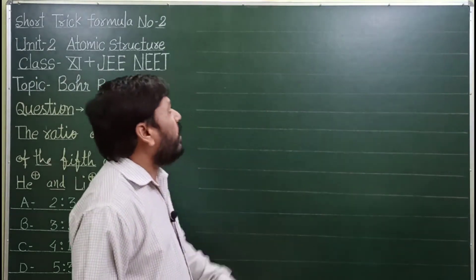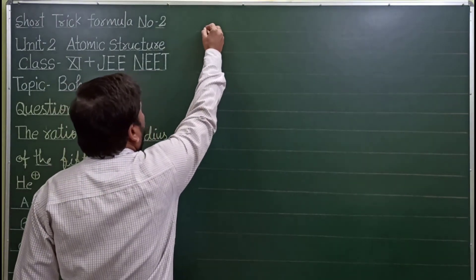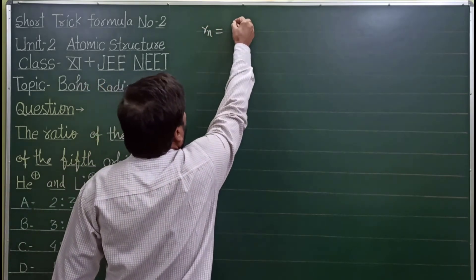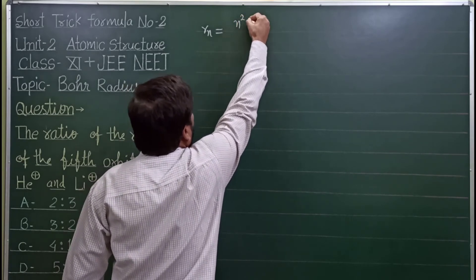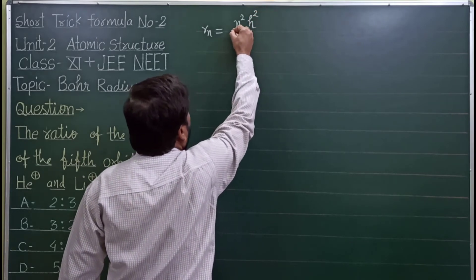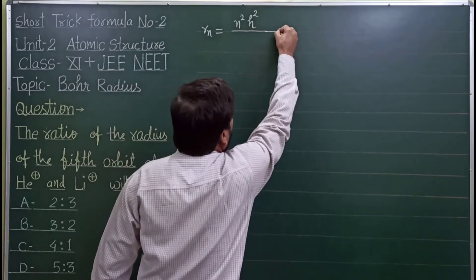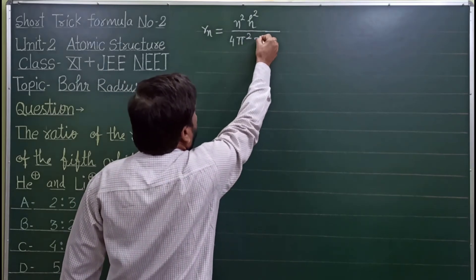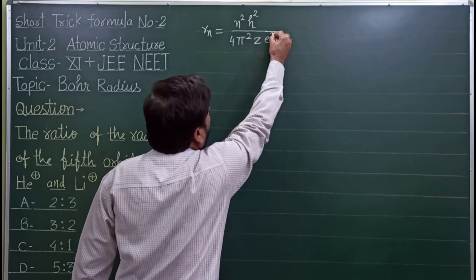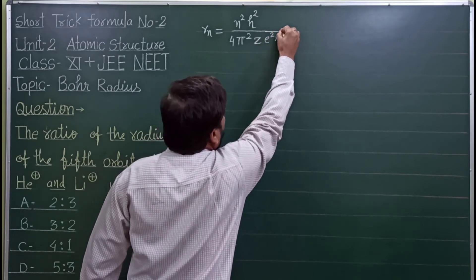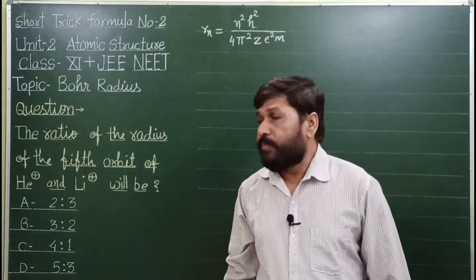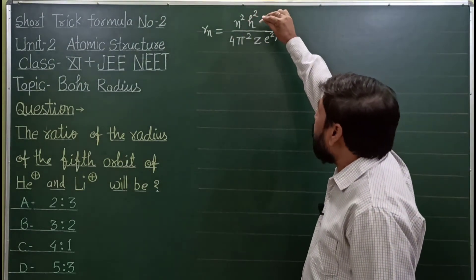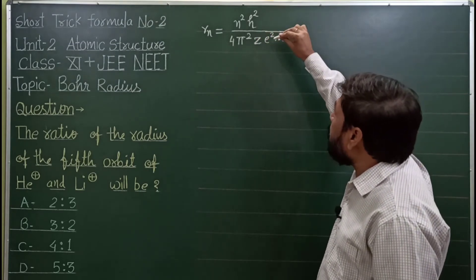Rn is equal to n² h² upon 4π² z e² m. This is the complete formula we need to know. Radius is equal to n² h² over 4π² z e² m.